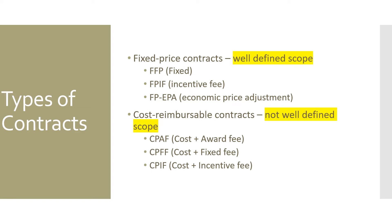The second type is the cost reimbursable contract, used when the scope is not well defined and you're anticipating changes. You do the work and the buyer reimburses the cost along with the profit. Types include Cost Plus Award Fee, Cost Plus Fixed Fee, and Cost Plus Incentive Fee — where fixed fee is the profit component and award or incentive is on top of that.